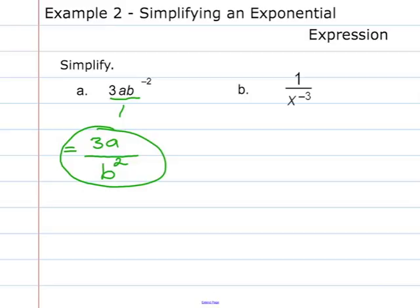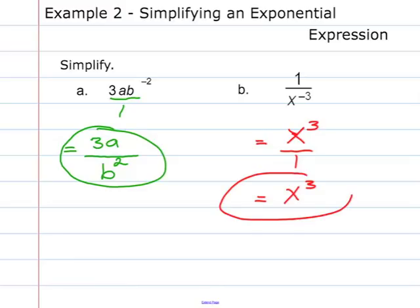Part b: 1 over x to the negative 3. A negative exponent in the denominator gets moved to the numerator to make it positive — negative exponents are bad math, so we always correct them. Moving x to the negative 3 to the numerator gives x to the third, leaving 1 in the denominator. Since anything divided by 1 is itself, 1 over x to the negative 3 simplified is x to the third power.